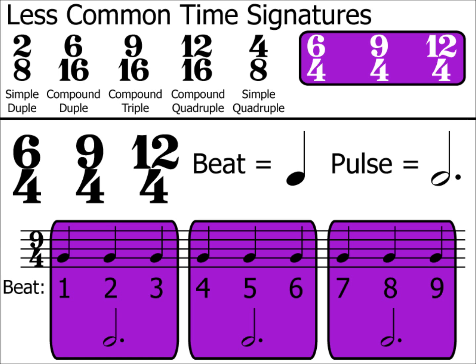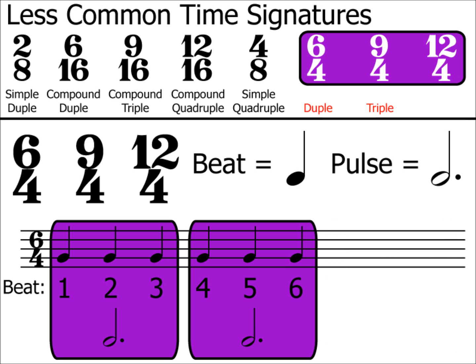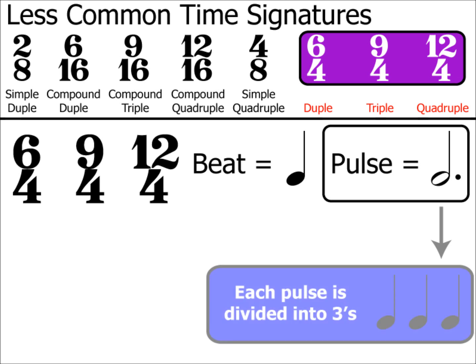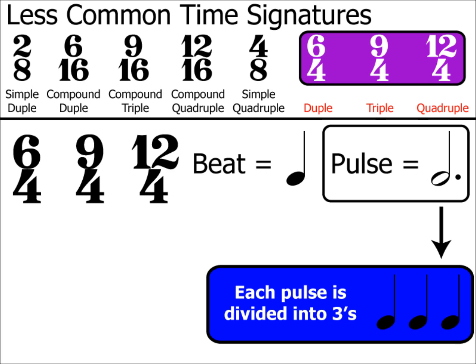There are 3 pulses in this bar of 9/4, meaning that 9/4 is in triple time. In 6/4, there are 2 pulses, making it duple time. 12/4 completes the trio, being the time signature with 4 pulses, hence being quadruple time. Each dotted minim can be split into 3 equal crotchets — a group of 3 — meaning that it is compound. Therefore, 6/4 is compound duple, 9/4 is compound triple, and 12/4 is compound quadruple.